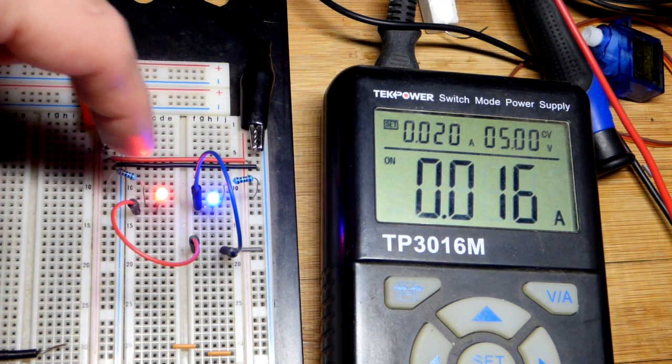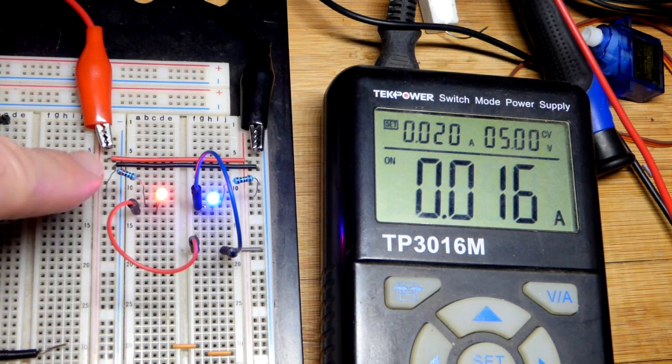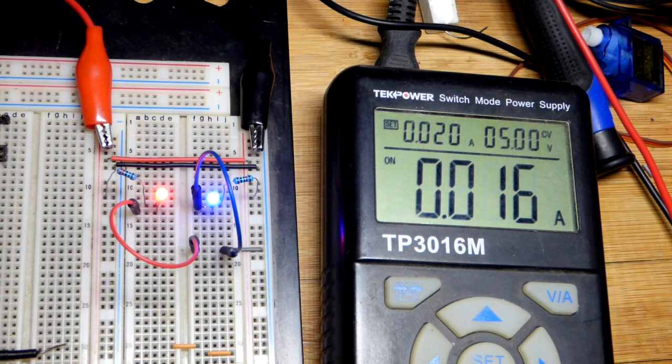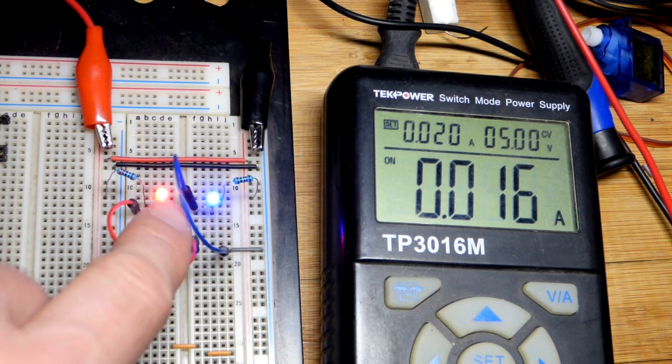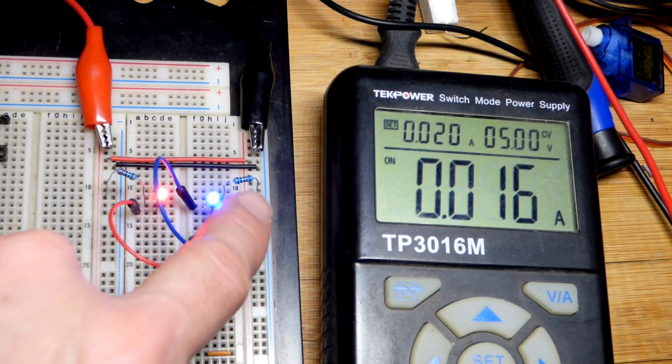We looked at last video, we got about 13.6 milliamps of current going through this red LED with a 220 ohm resistor protecting it from 5 volts. Whereas the blue LED, we have much less current, but you can see they're about the same brightness. That's one reason why I wanted to compare this.